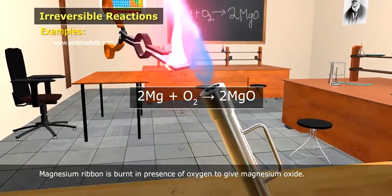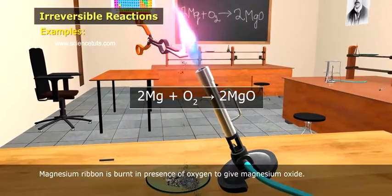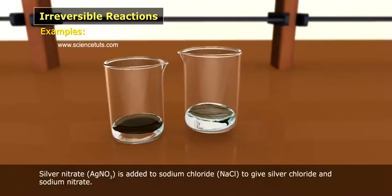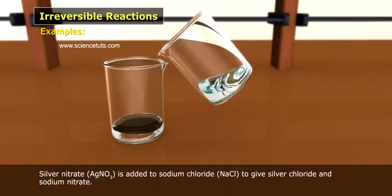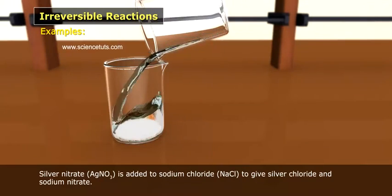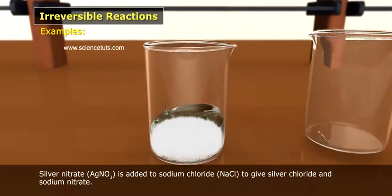2Mg plus O2 leads to 2MgO. Silver nitrate AgNO3 is added to sodium chloride NaCl to give silver chloride and sodium nitrate.